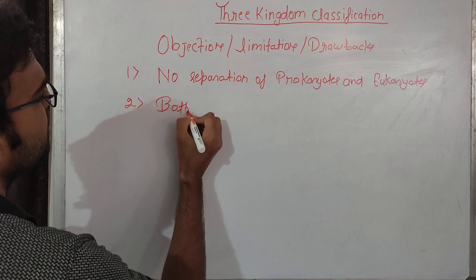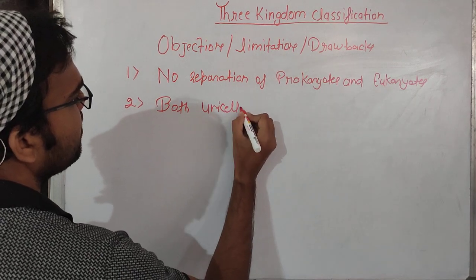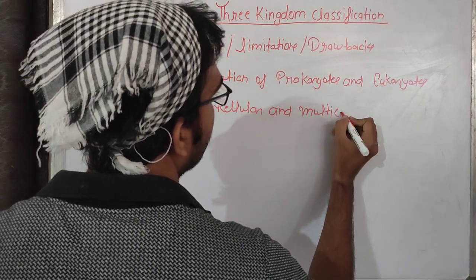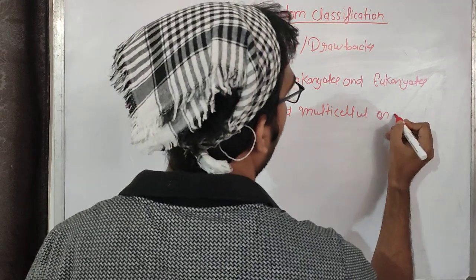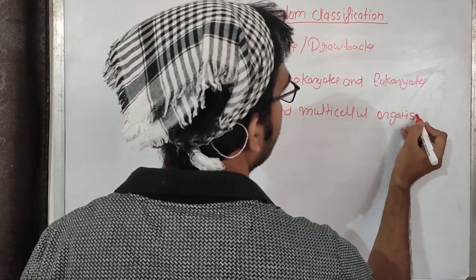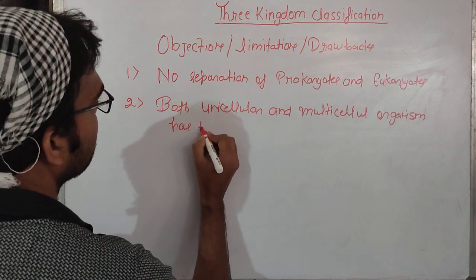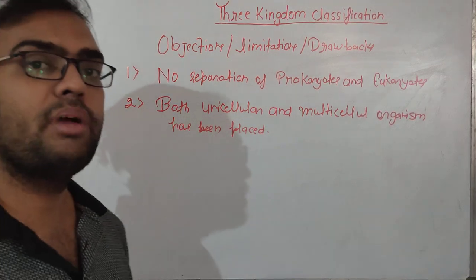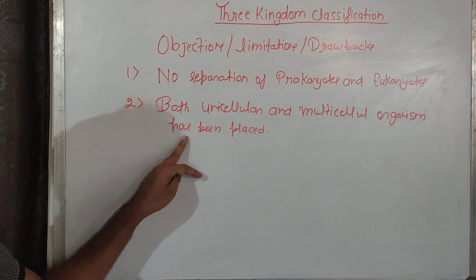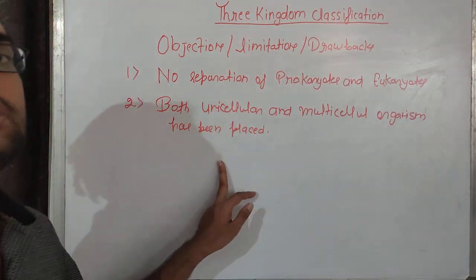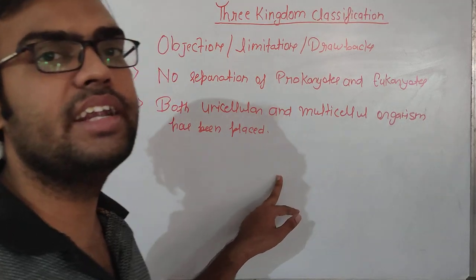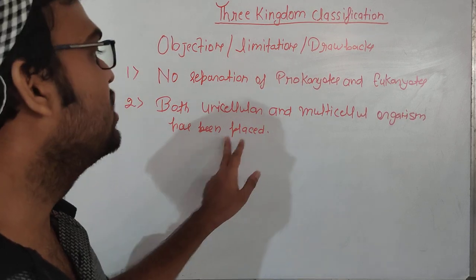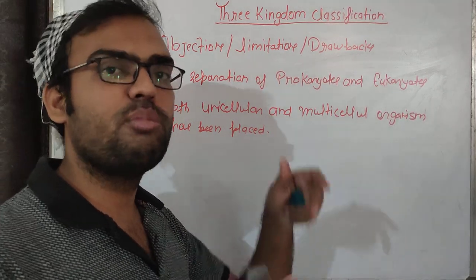The second drawback is that both unicellular and multicellular organisms have been placed under the group Protista. He didn't differentiate between unicellular and multicellular organisms, so all organisms — whether single-celled or multi-celled — were kept in the same Protista group.